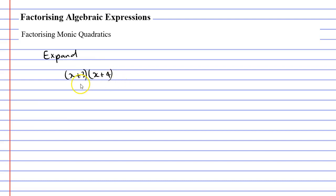If you've forgotten how to expand an expression like this, you need to look back at some previous lessons on expanding. Anyway, what we do is we look at the first set of brackets — we've got two terms, x and 3. We write the x down first with the second set of brackets, x plus 4, next to it. And then after taking x, we take the 3, or positive 3, and write the same second set of brackets, x plus 4, next to it.